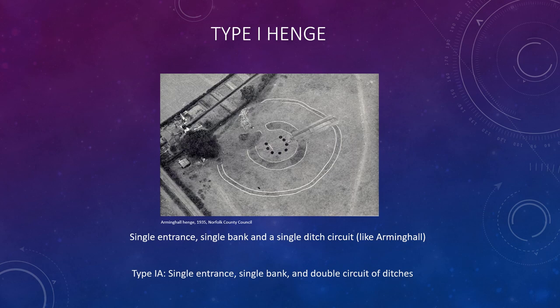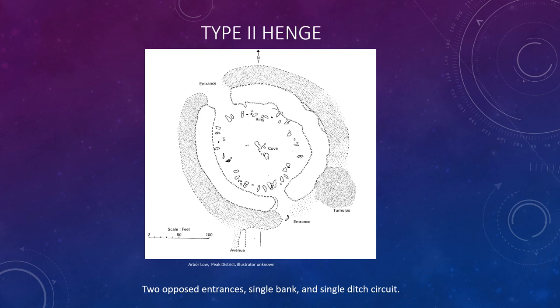Next comes the Type 2 henge. This diagram is of Arbor Low in the Peak District and this is a Type 2 henge — it has two opposed entrances, a single bank and a single ditch circuit. Type 2 henges ended up being split into two subclasses, with Type 2 and then later on Type 2a.